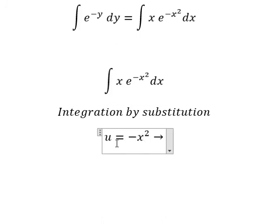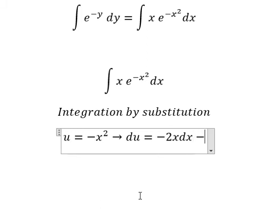We need to take the first derivative for both sides and we have du equals negative 2x dx. Because we don't have negative 2, we need to divide both sides by negative 2, so du over negative 2 equals x dx.